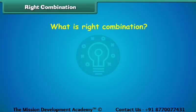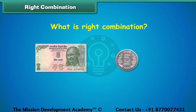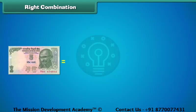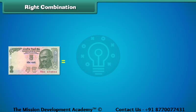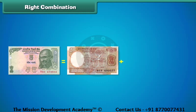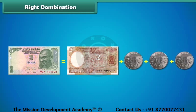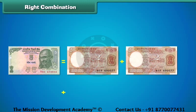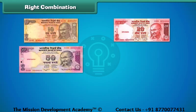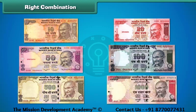Let us learn about some right combinations of notes and coins. 1 five-rupee note is equal to the sum of 5 one-rupee coins. 1 five-rupee note is also equal to the sum of 1 two-rupee note and 3 one-rupee coins. Similarly, 1 five-rupee note is equal to the sum of 2 two-rupee notes and 1 one-rupee coin. All these are right combinations. Similarly, we can have different right combinations for 10, 20, 50, 100, 500, and 1000 rupee notes.